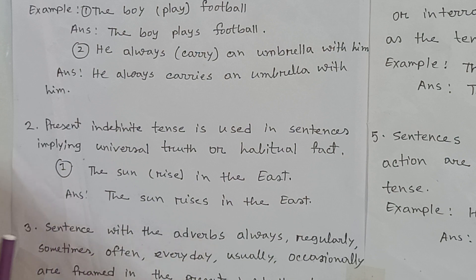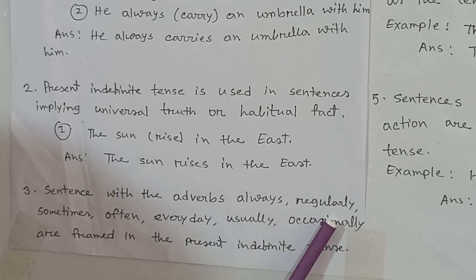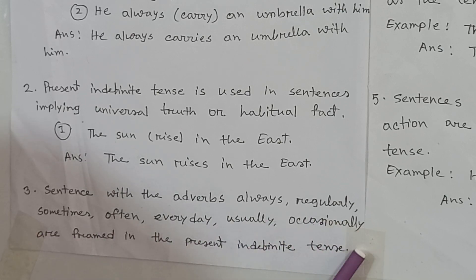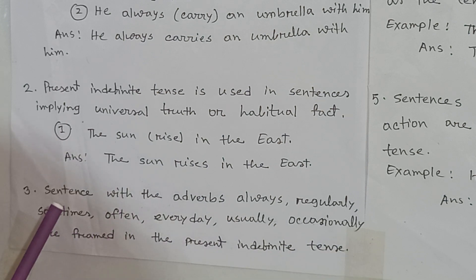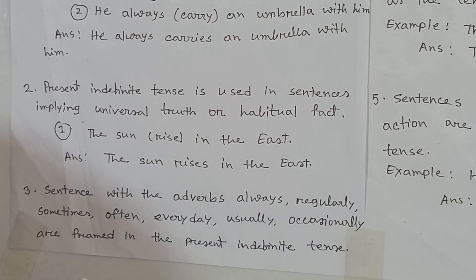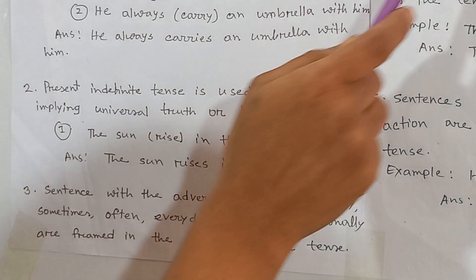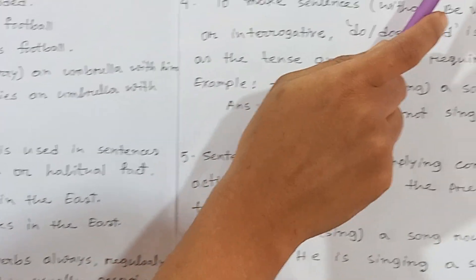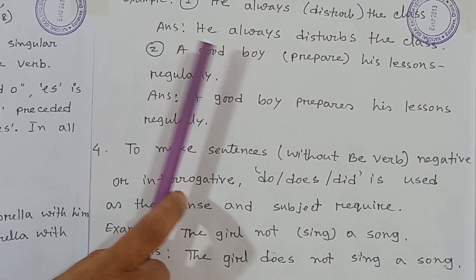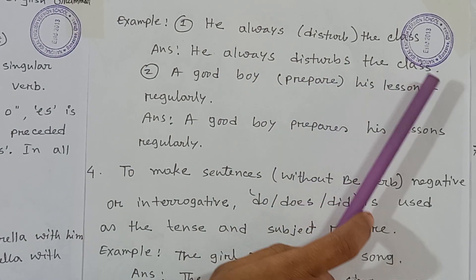Rule number three: sentences with the adverbs always, regularly, sometimes, often, every day, usually, occasionally are framed in the present indefinite tense. For example, 'He always (disturb) the class' — you write 'He always disturbs the class.'